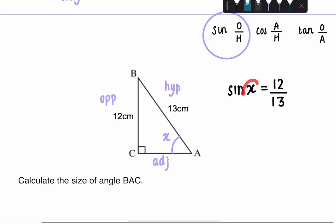So then to get X on its own, you need to do the reverse of sine, which is inverse sine. So X is equal to sine, and then with a little minus one, 12 over 13.